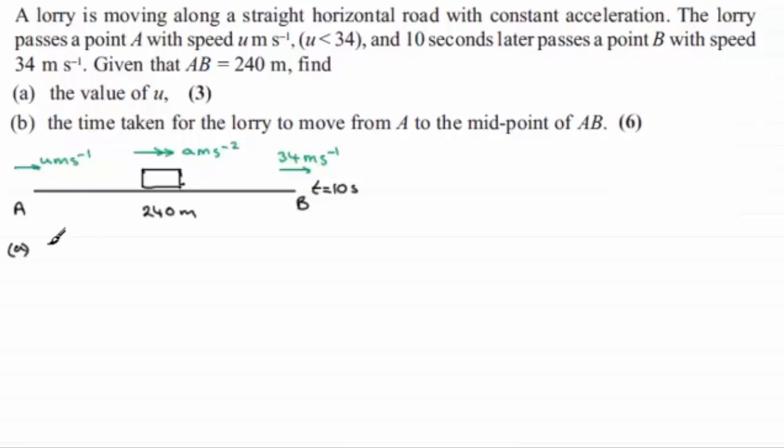So for part A then, we need to set up a positive sense. And I'm going to take that positive sense to the right. And so that means if I list out my variables, S for displacement, U for the initial velocity, V for the final velocity, A for the acceleration, and T for the time taken.